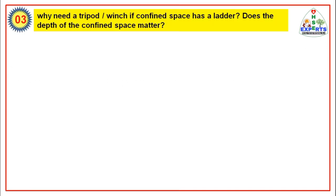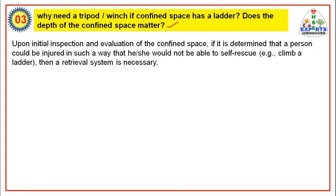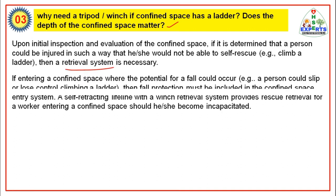The third question is: why is a tripod needed in a confined space that has a ladder? Does the depth of the confined space matter? Upon initial inspection and evaluation of the confined space, if it is determined that a person could be injured in such a way that he or she would not be able to self-rescue — for example, climb a ladder — then a retrieval system is necessary. If entering a confined space where the potential for a fall could occur, for example a person could slip or lose control climbing a ladder, then fall protection must be included in the confined space entry system.